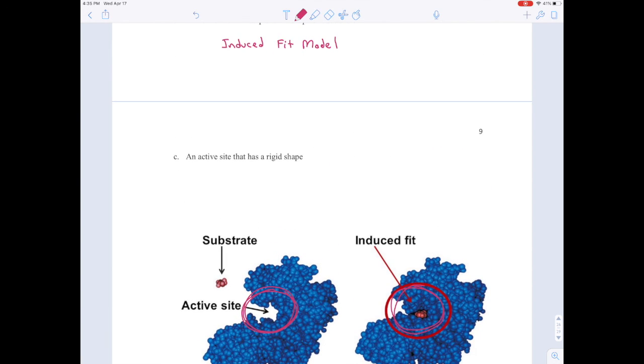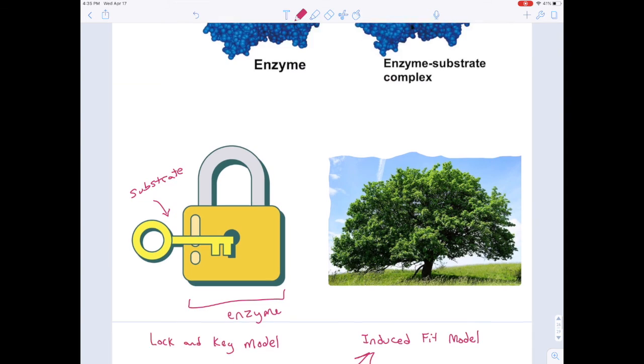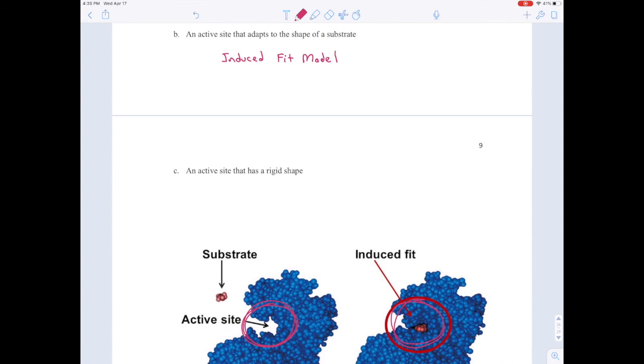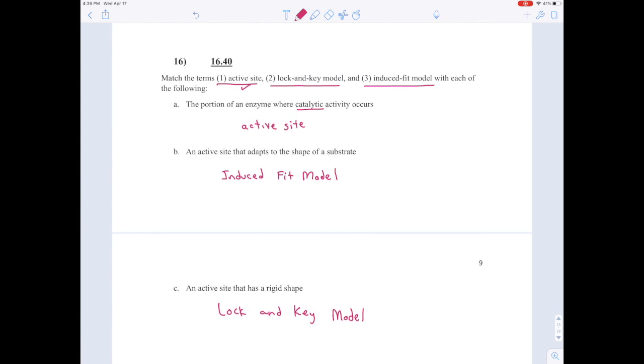C says an active site that has a rigid shape. That rigid shape is referring to the lock and key model. So you would say lock and key model. And that would be it for question 16.